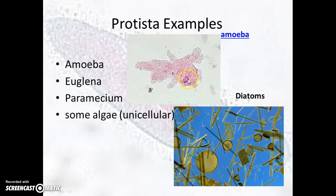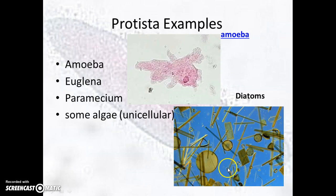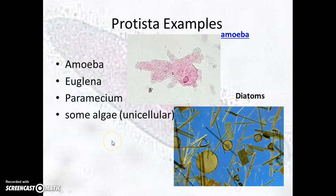Here you can see the nucleus of an amoeba. Euglena and paramecium are not pictured here, but diatoms are another example of a protist — they can be very colorful and pretty. Some algae are also considered protists if they are unicellular.